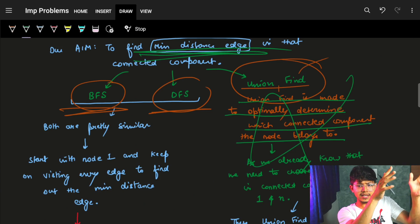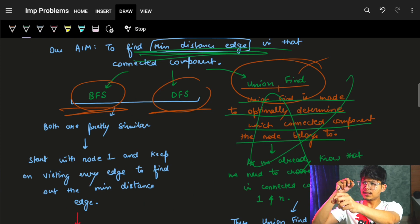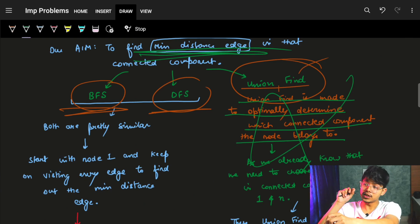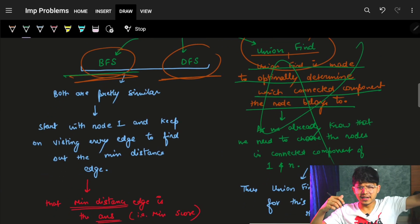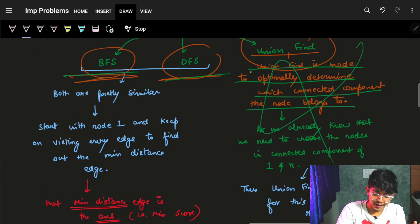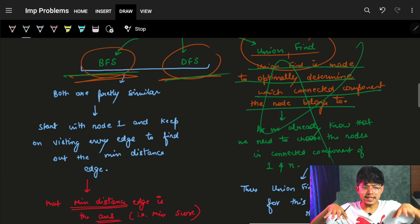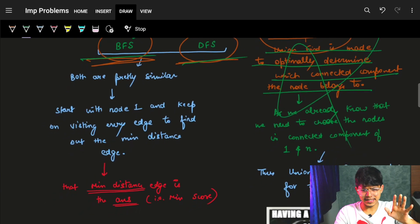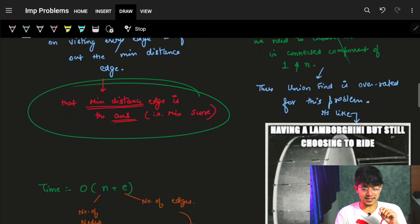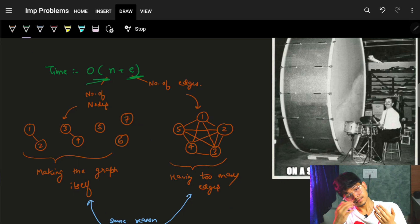With BFS or DFS starting from node one, I visit every node and every edge in that component and find the minimum edge value — that is my answer. Both BFS and DFS achieve the same goal of visiting every node and edge.